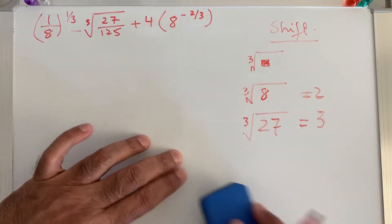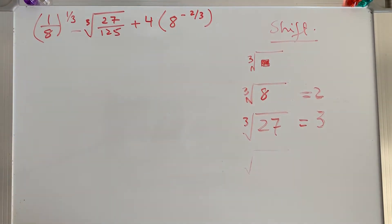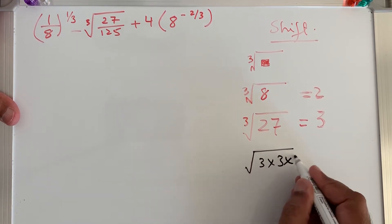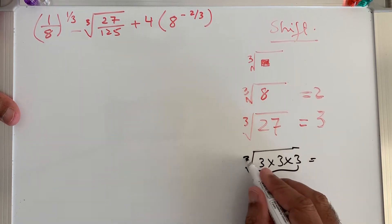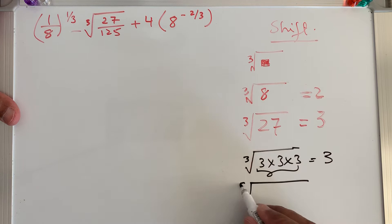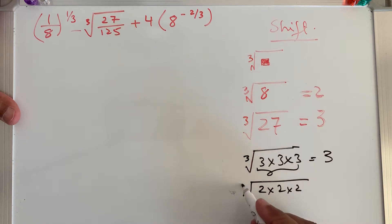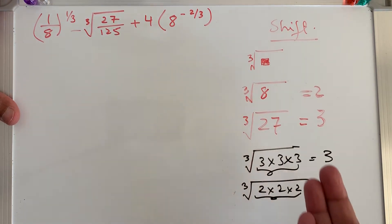Cube root means we break the number and multiply it 3 times, then group it in sets of 3. For square root we pair in 2s; for cube root we pair in 3s. For example, 3 × 3 × 3 = 27, so cube root of 27 is 3. For 8: 2 × 2 × 2 = 8, so cube root of 8 is 2.